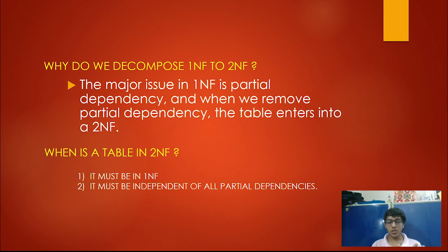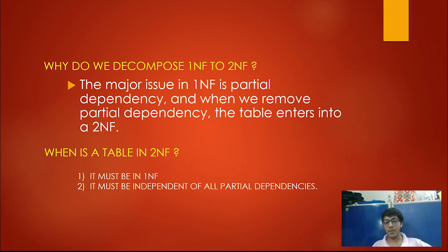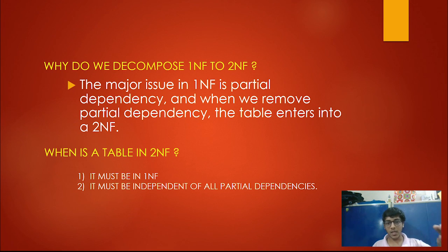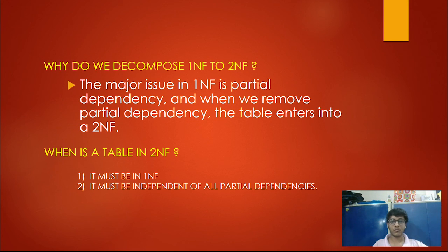The major issue in first normal form is that partial dependencies may still be present. When we remove these partial dependencies, the table enters second normal form. A table is in 2NF when: first, it must be in first normal form; second, it must be independent of all partial dependencies — there should not be any partial dependency present.